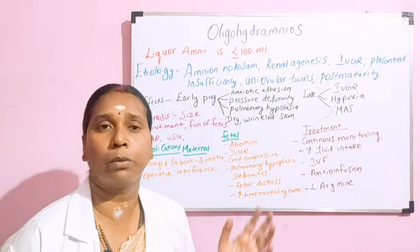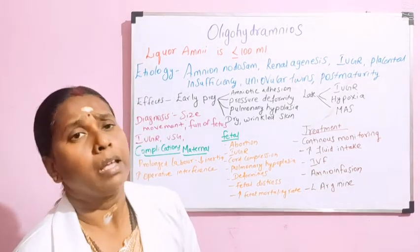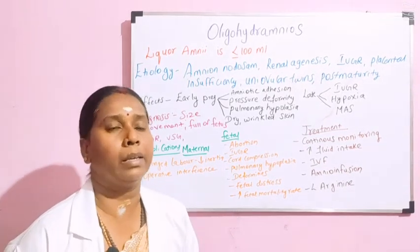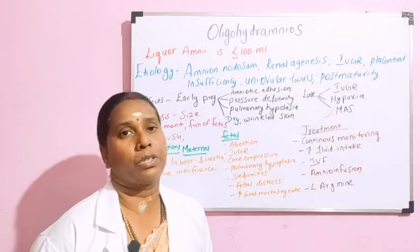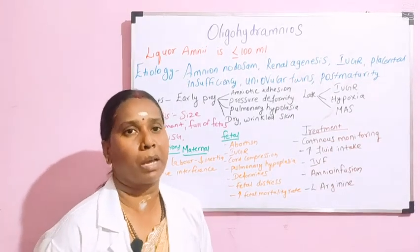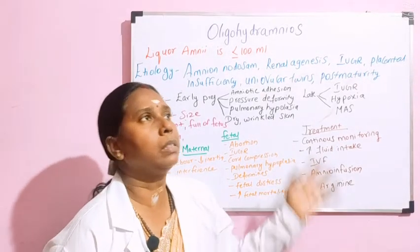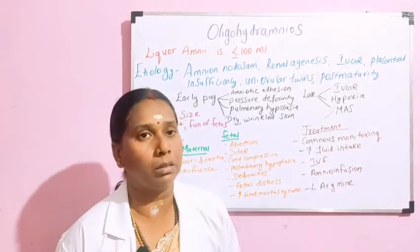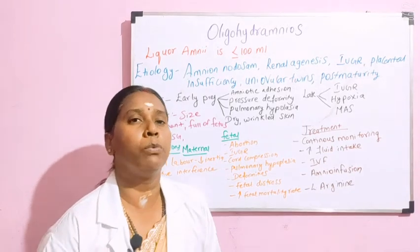Then pulmonary hypoplasia — we have seen there is decreased lung maturity for the fetus. Then deformities: there may be deformity of the skull, neck, hands, or foot because of compression of fetal parts. Then fetal distress, already discussed with meconium aspiration syndrome — the baby passing meconium inside the uterus — which causes increased fetal mortality. Amniotic band formation around the neck can also cause fetal death, so the fetal mortality rate is high with oligohydramnios.